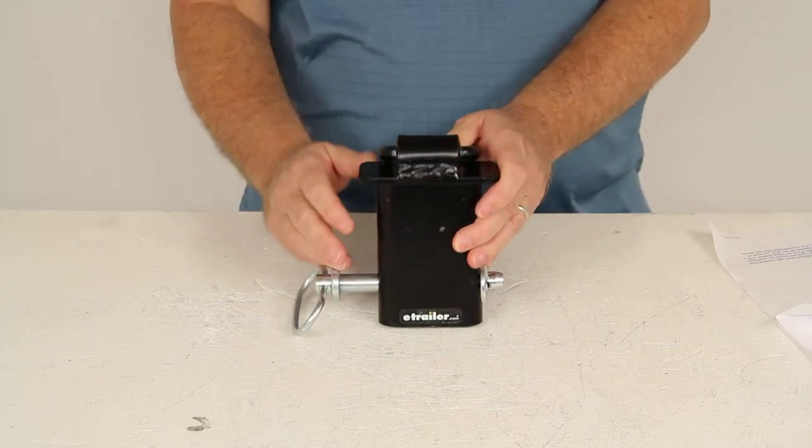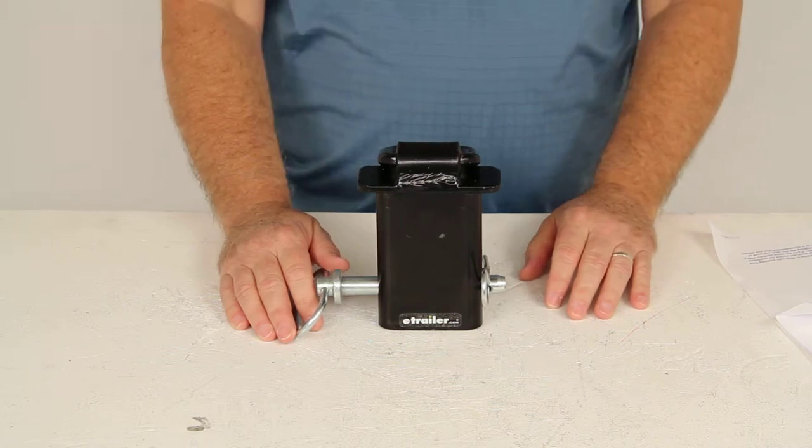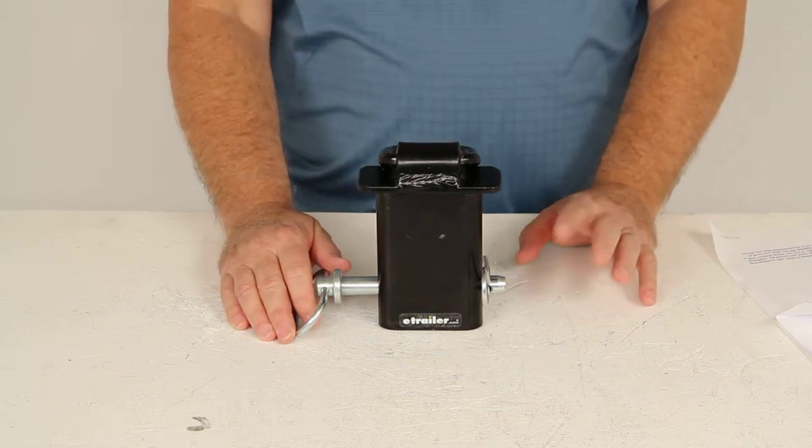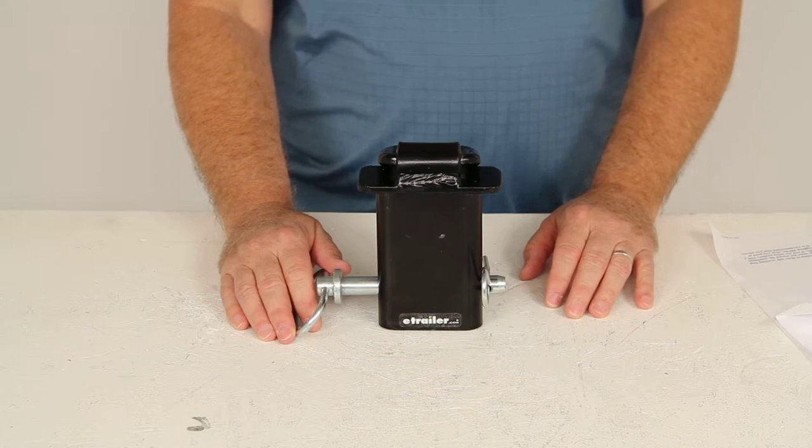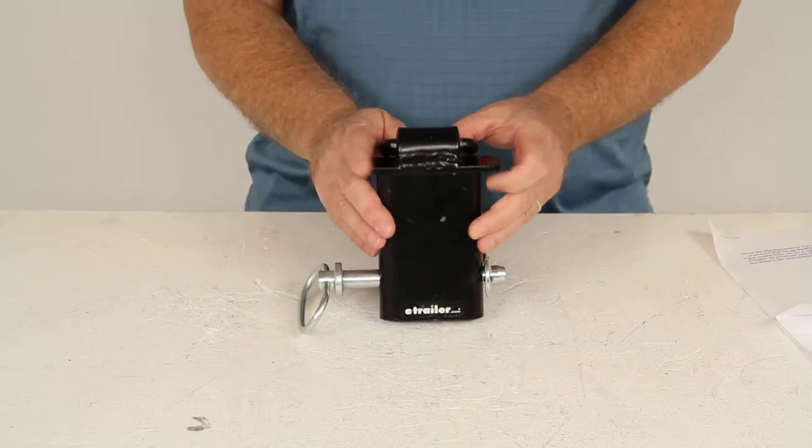So for example if you're using an anchor with a working load limit of 100 pounds each to tie down a load weighing 400 pounds then you would need 4 anchors to safely secure that load. And it is also recommended to always use these anchors in pairs.